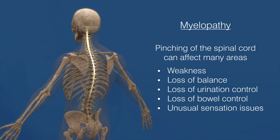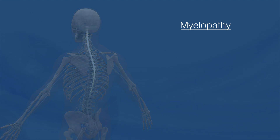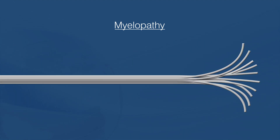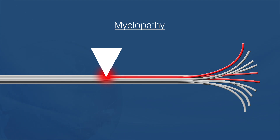Most commonly, there's weakness and loss of body control issues, including balance, urination, bowel movements, and unusual sensation issues. The spinal cord is more complicated than individual nerves. In discussing radiculopathy, I used a model of an individual wire traveling from a light switch to a specific light. To better understand myelopathy, instead of a single wire, the best analogy is a bundle of individual wires traveling together tightly wound into a large cable. The cable can be compressed and damaged, causing the individual wires to short-circuit each other, or it may damage just a portion of the wires, causing unusual electrical outages, intermittent outages, and even reduced electrical signals.